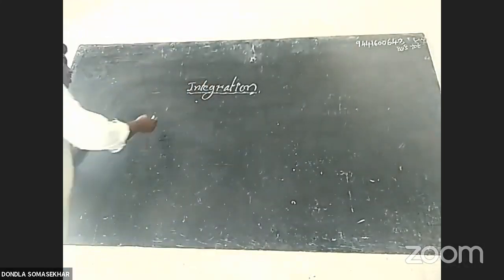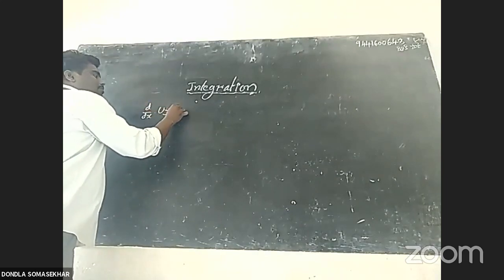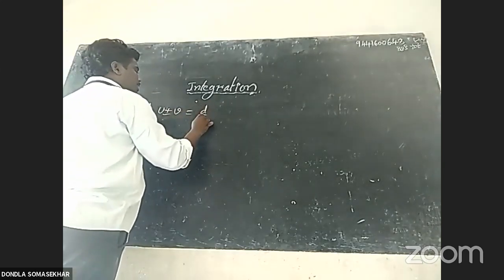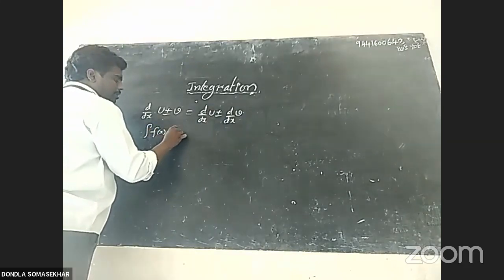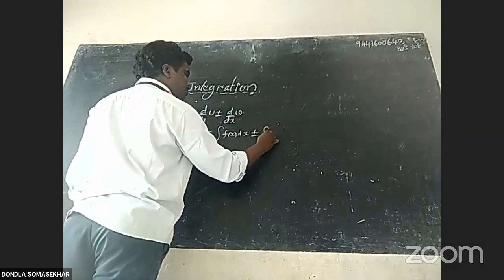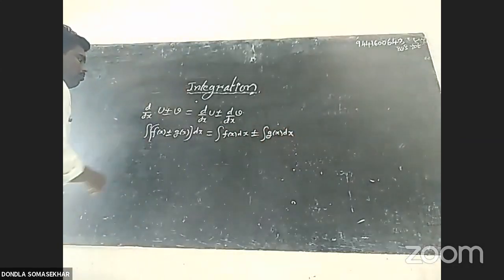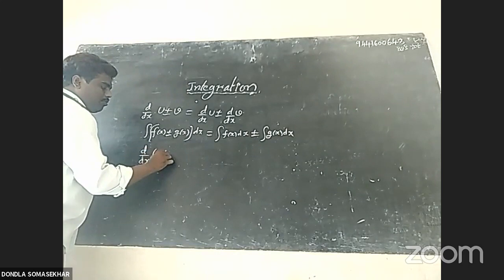Some integration formulas: the sum and difference rule. Just as d by dx of u plus or minus v equals d by dx of u plus or minus d by dx of v, so integral of f of x plus or minus g of x dx equals integral of f of x dx plus or minus integral of g of x dx. For products, we use the integration by parts formula.